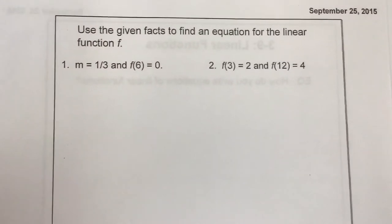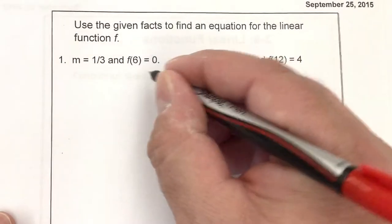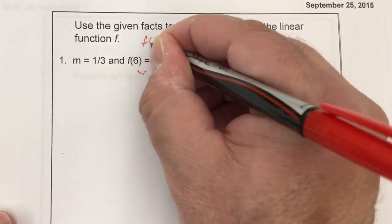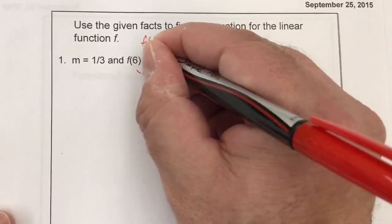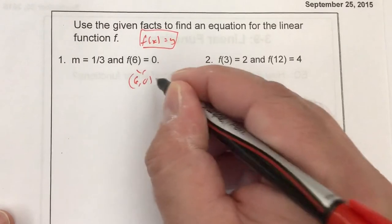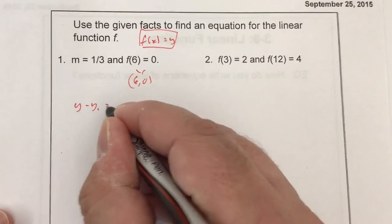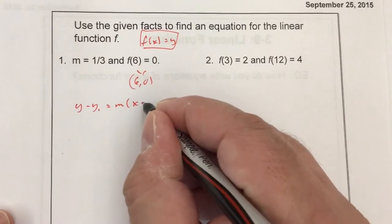Here's two problems. We want to use the given facts to find an equation of the linear function f. This value right here, since f(x) equals y, tells me we have an ordered pair (6, 0). I use the point-slope form, the easiest way to do these.